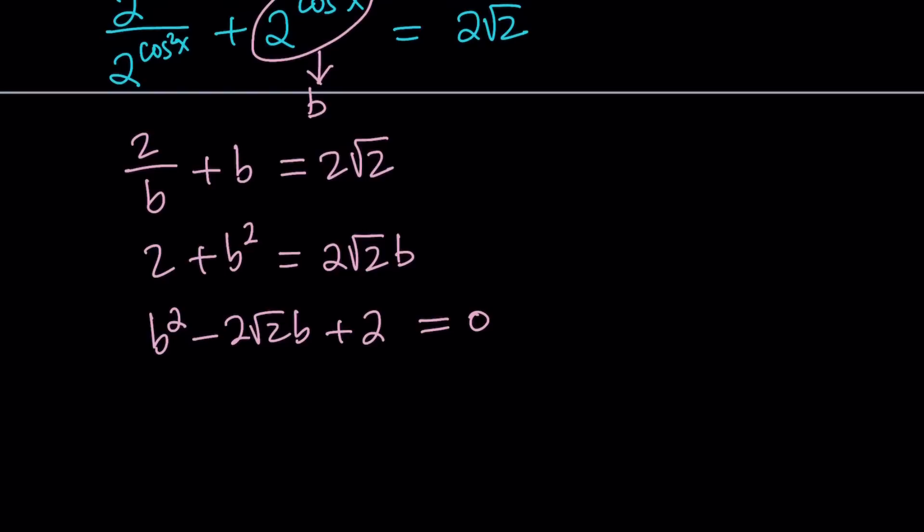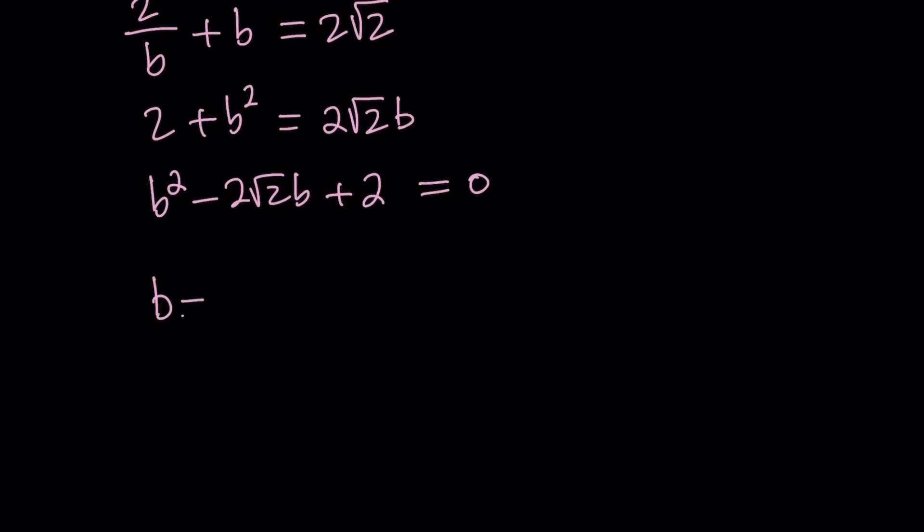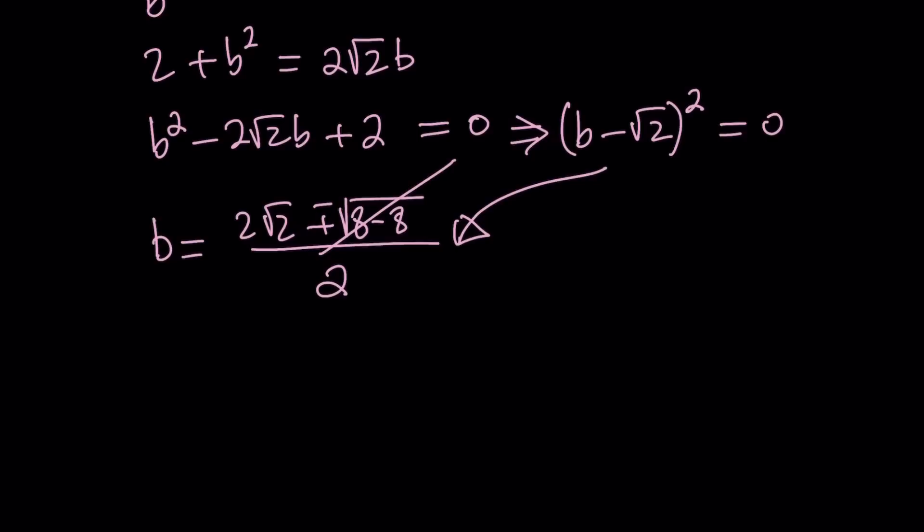This is a quadratic equation, so we should be able to solve it with the quadratic formula. And the quadratic formula gives us b equals negative b plus minus the square root of b squared, which is 8, minus 4 times 2, which is 8. 8 minus 8 is equal to 0. What is going on here? So here's the thing: the discriminant is 0. But why? Because this can be written as a perfect square. It is a perfect square. So this is b minus root 2 squared. Make sense? That's why the discriminant is 0, because we only have one root, a parabola that is tangent to the x-axis. So the only value of b from here is b equals square root of 2.